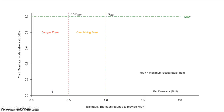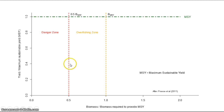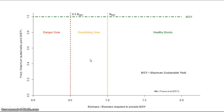Between 0.5 BMSY and BMSY, stock levels are lower than those required to produce the maximum sustainable yield, and a stock is generally considered to be overfished because it is lower than the amount required to reliably produce the maximum sustainable yield. Stock levels higher than BMSY are considered to be healthy — there are more than enough animals in the population to produce the maximum sustainable yield on a regular basis.